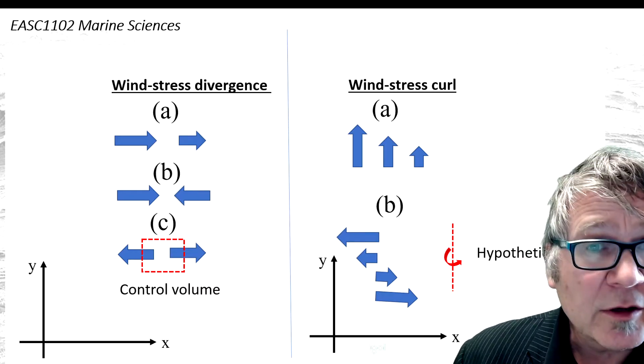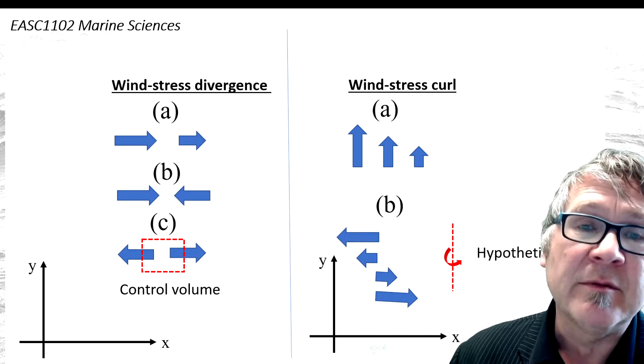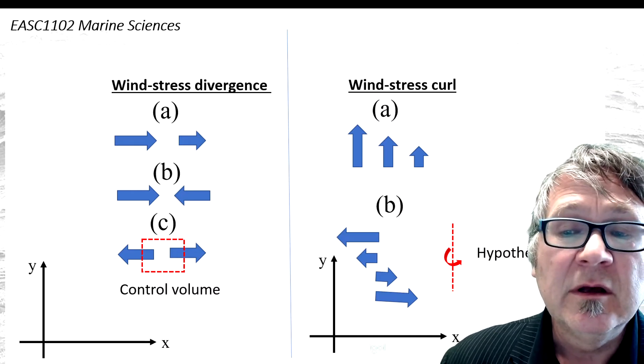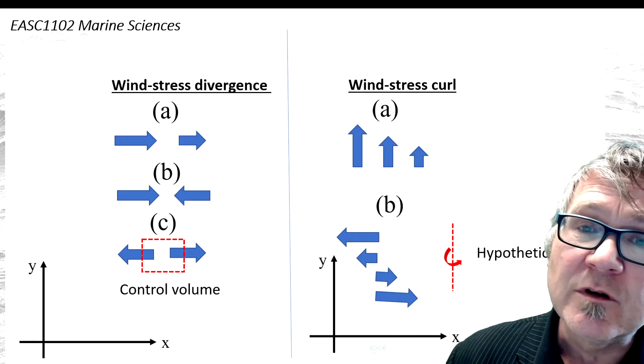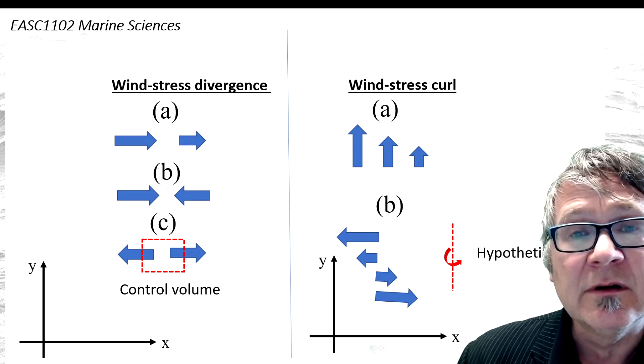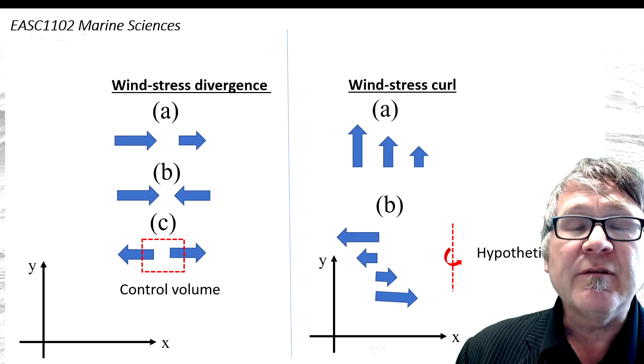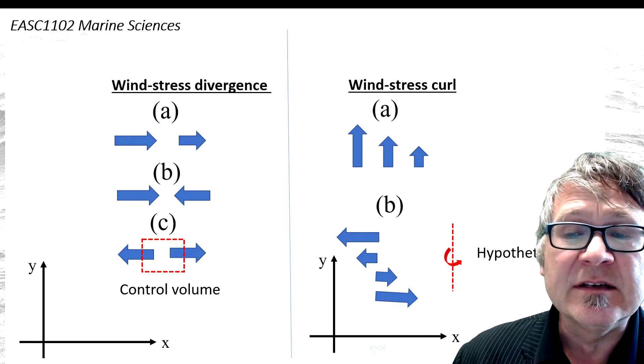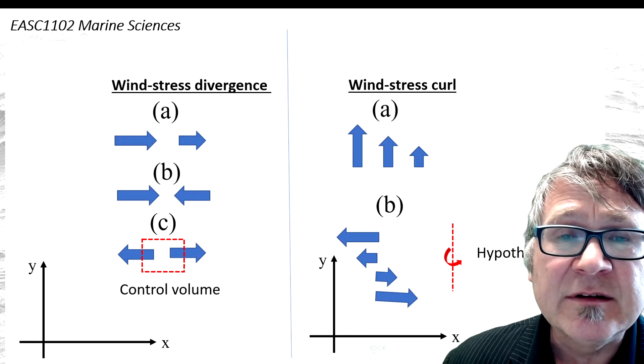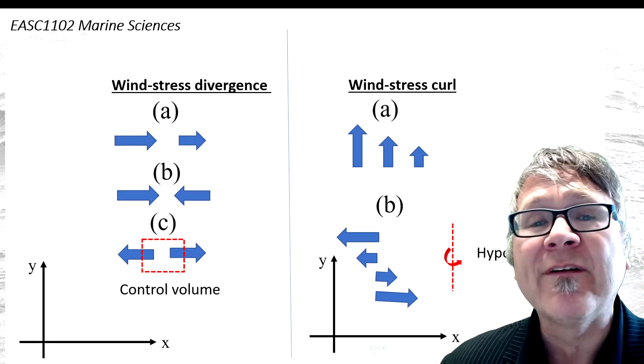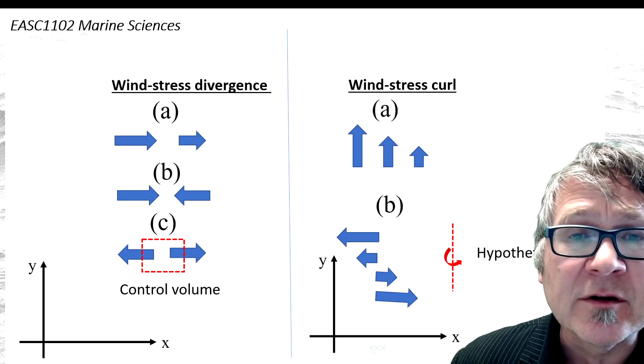To identify this situation, imagine you have a control volume, like a house. In this example, you have two horizontal doors—one front door, one back door. Divergence or convergence occurs when there is a net inflow or outflow of air through your horizontal doors.